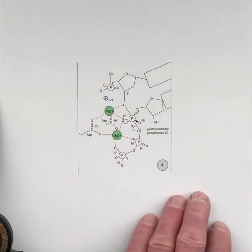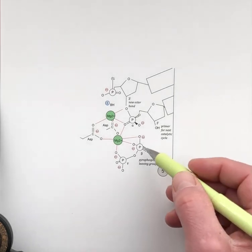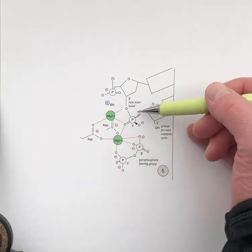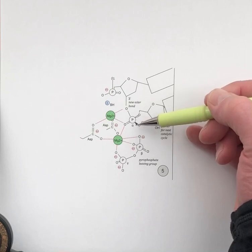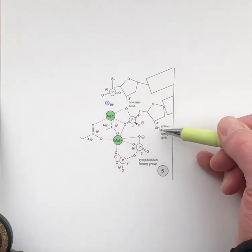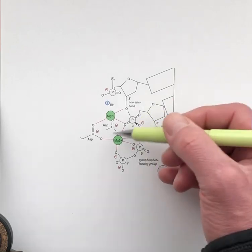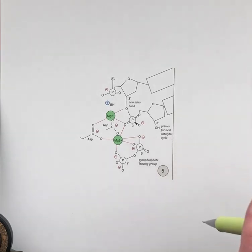The new bond forming connects the 3'-hydroxyl and the alpha phosphate. The final product shows the completely detached pyrophosphate leaving group and a new ester bond linking the primer DNA to the new nucleotide. Importantly, a new 3'-hydroxyl is generated for the next catalytic cycle, and DNA polymerase can move this catalytic apparatus one unit forward to continue template-directed addition of the next nucleotide triphosphate.